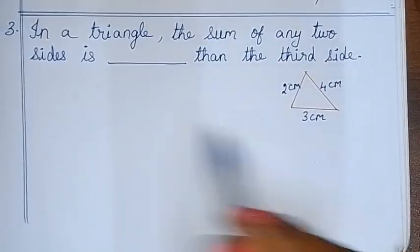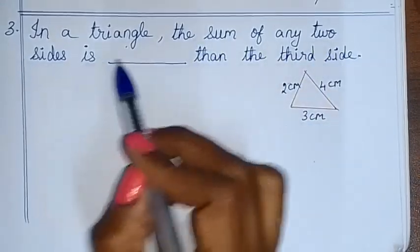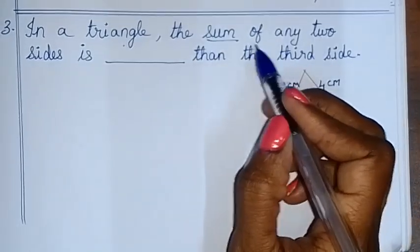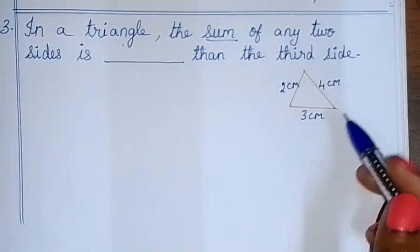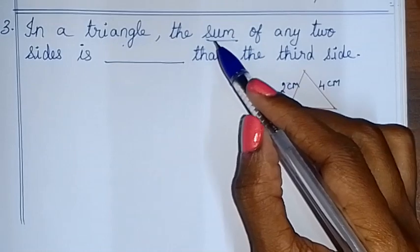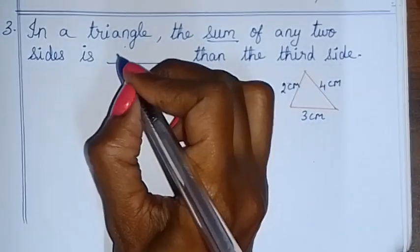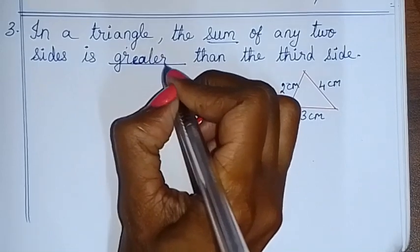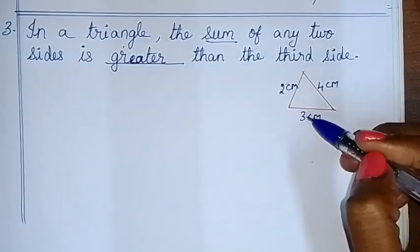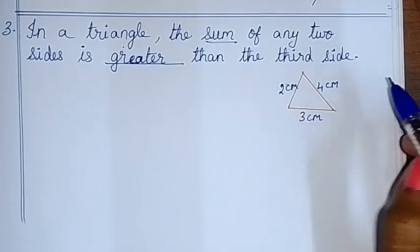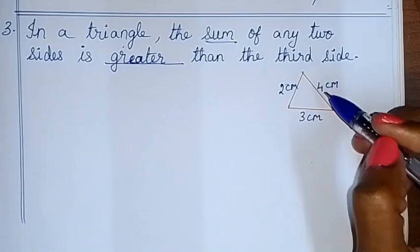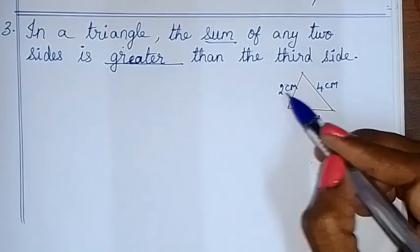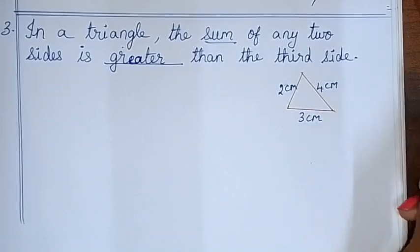In this triangle, the sum of any two sides is greater than the third side. If you add 2 sides — 2 plus 3 is 5, which is greater than the third side. This is the triangle property. If you add 4 plus 3 is 7, and 4 plus 2 is 6, both are greater than the third side. This is the triangle property.